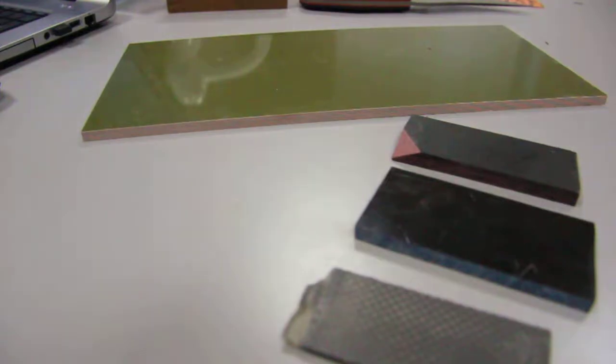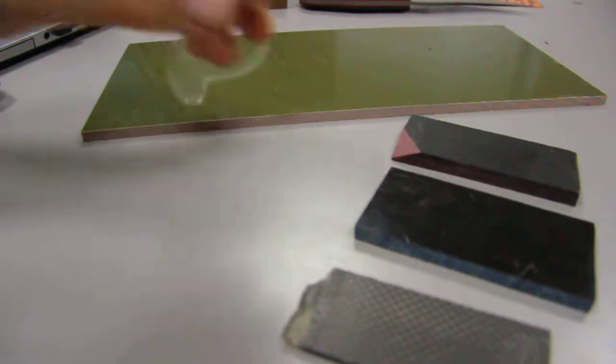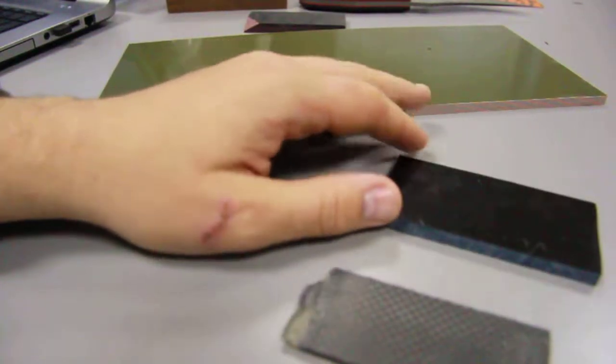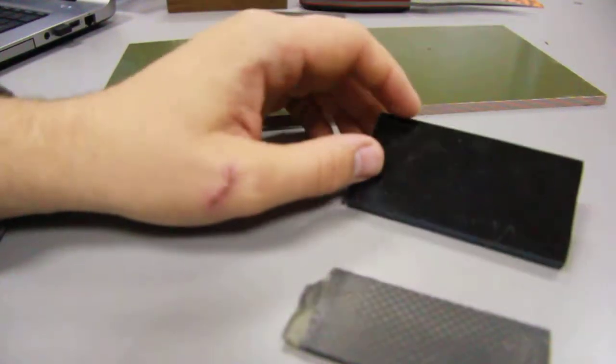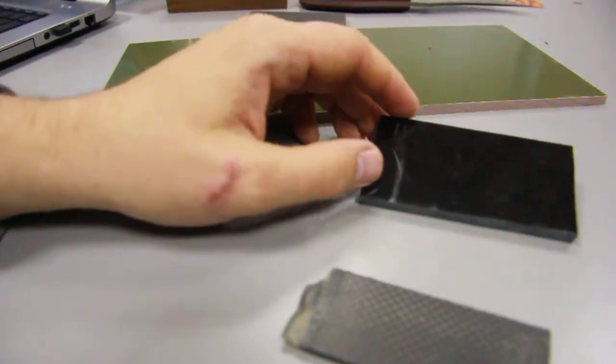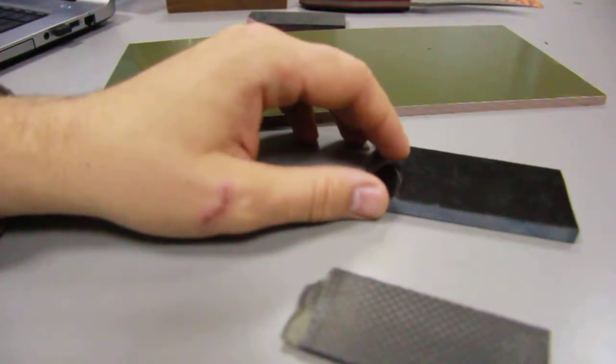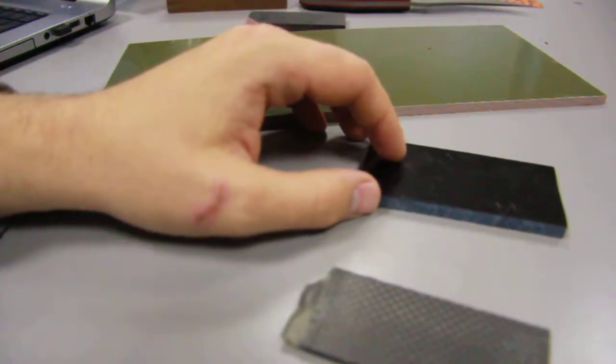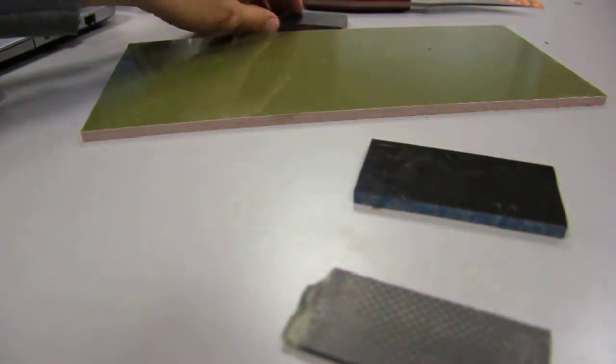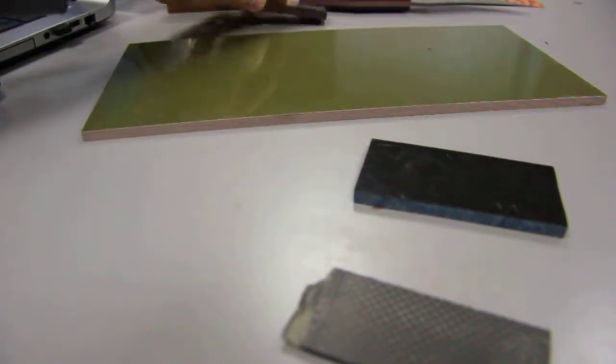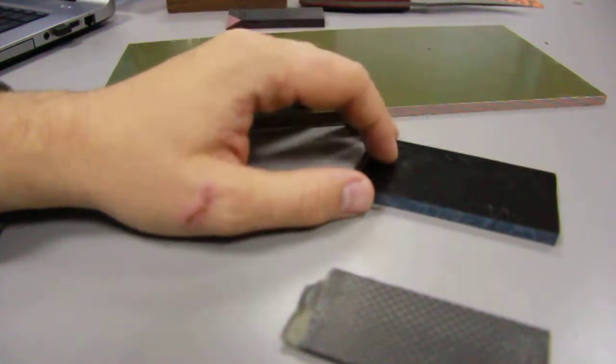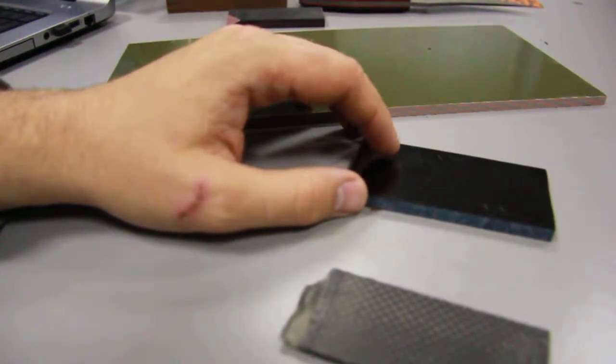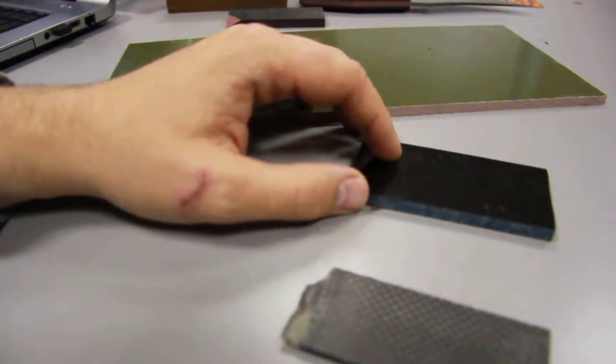The next piece here is G10. You might have heard of knives which have G10 handles. G10 is a sort of glass fiber laminate, so when micarta is made we use natural cloths, but when we make G10 we use glass fiber laminates, glass fiber cloth.